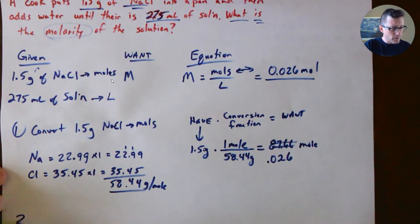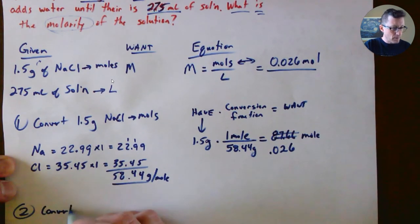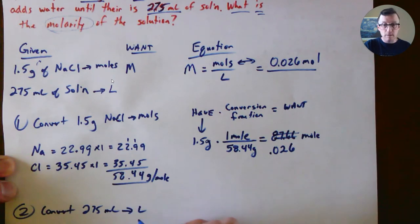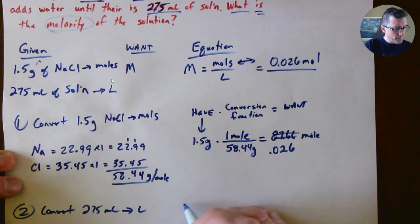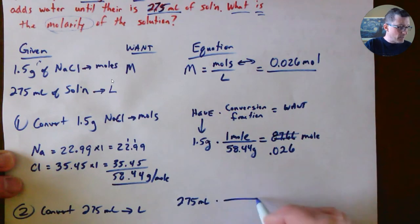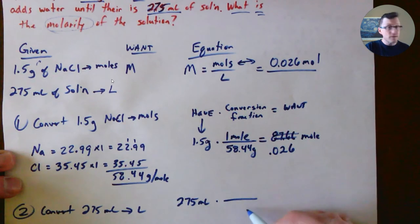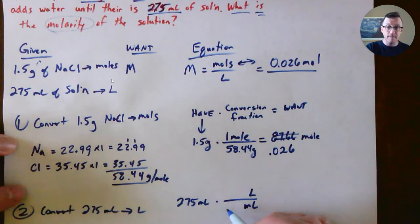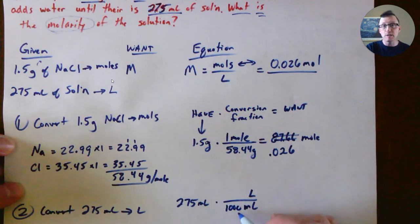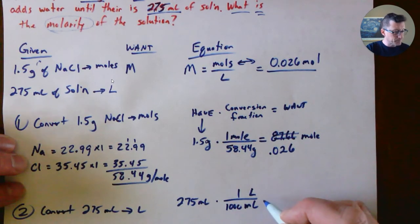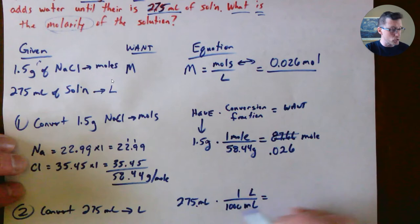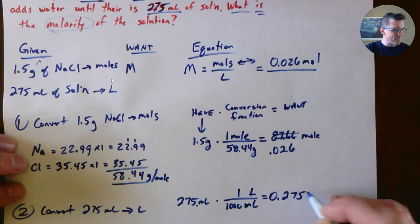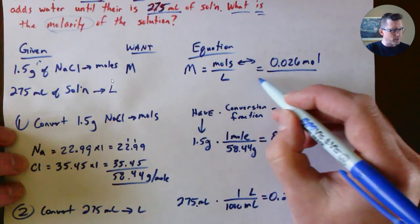Now, how do I get my liters? I have to convert 275 milliliters into liters. For the conversion fraction, I want milliliters to cancel, so milliliters goes on the bottom and liters on the other side. Remember that 1,000 milliliters equals one liter. Dividing by 1,000 moves the decimal point three places, giving 0.275 liters. That number goes in the denominator.